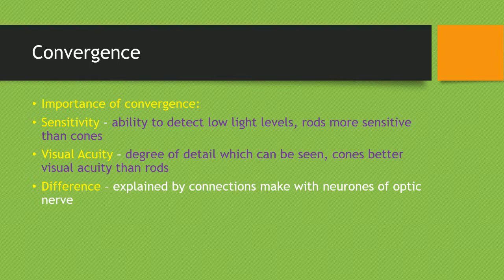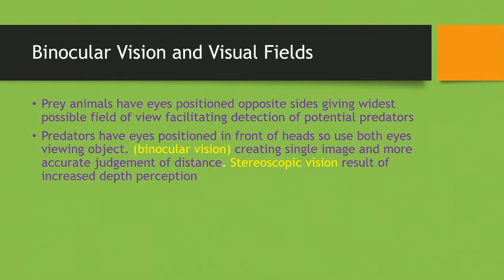Regarding the importance of convergence: sensitivity is the ability to detect low light levels, which rods are more perceptive at than cones. Visual accuracy is the degree of detail which can be seen — cones have better visual accuracy than rods. This difference is explained by the connections they make with the neurons of the optic nerve.